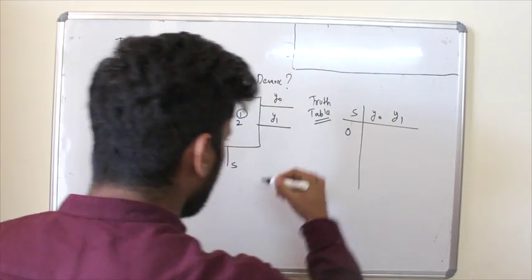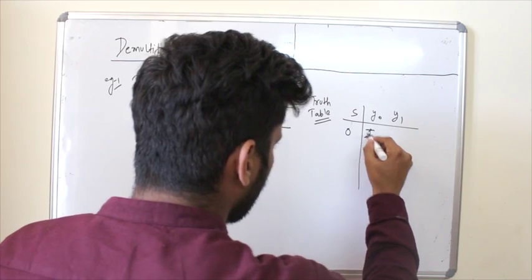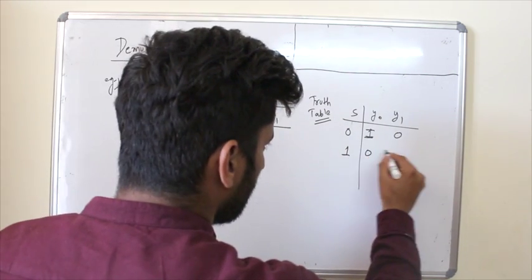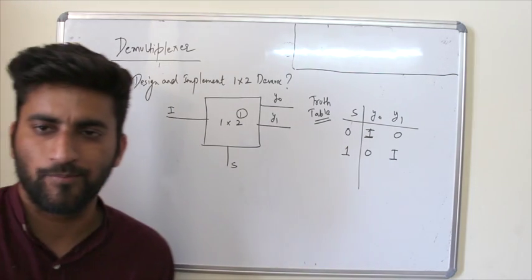And that is we have single input. So we always take select line over here and we have 2 outputs y0, y1. So when select line is 0, input is on which output? y0. So i is coming on y0, y1 is 0. Then select line is 1, so input is coming on y1.